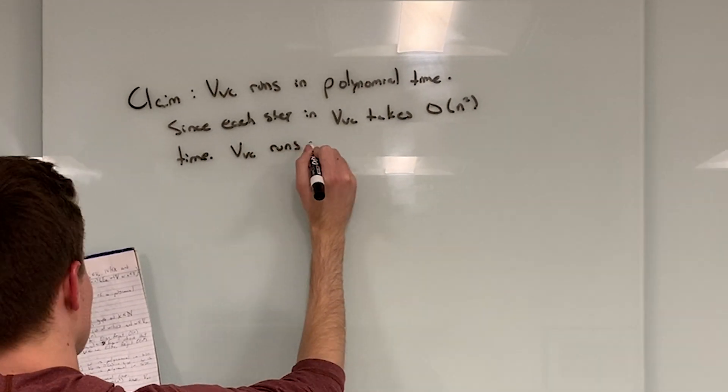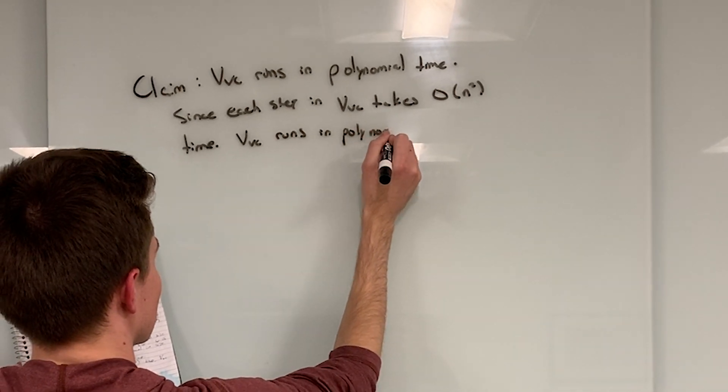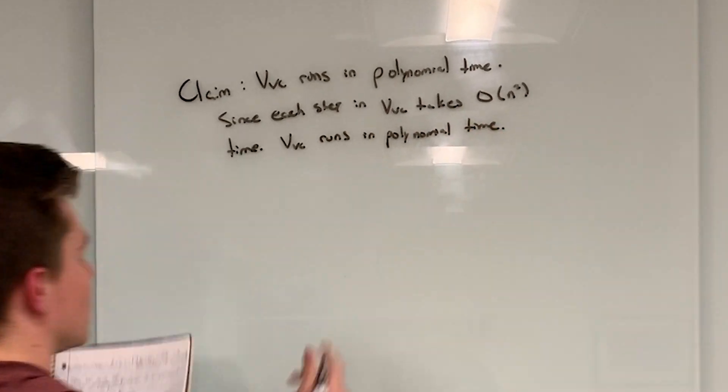We know the final step takes more or less constant time. Therefore, the verifier runs in polynomial time.